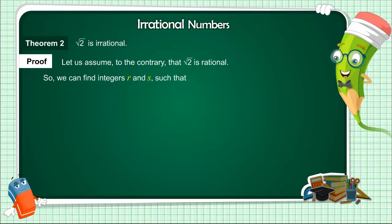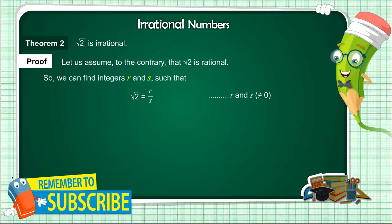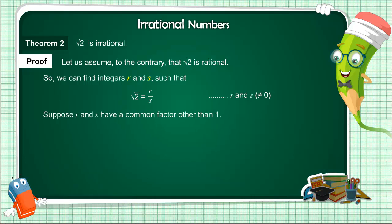So we can find integers R and S such that √2 = R/S. Suppose R and S have a common factor other than 1. Then we divide by the common factor to get √2 = A/B, where A and B are coprime.